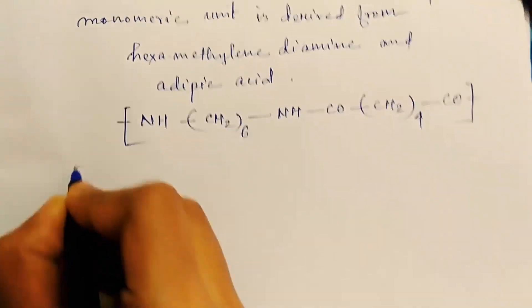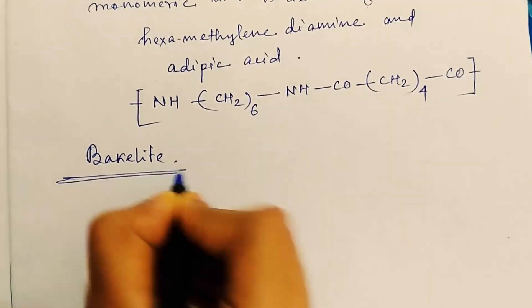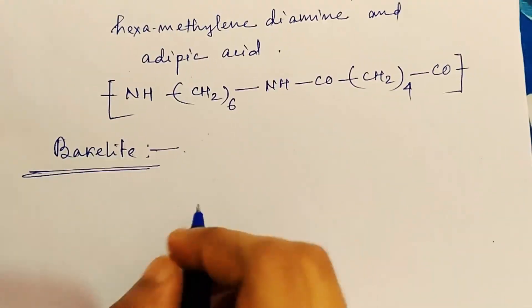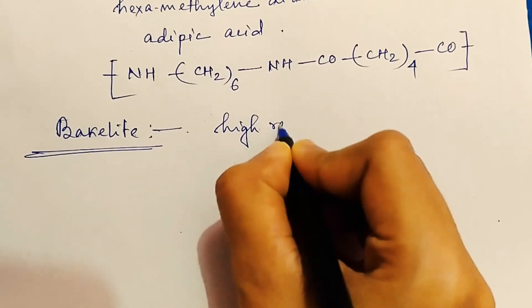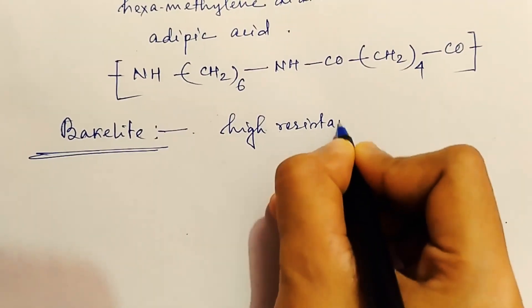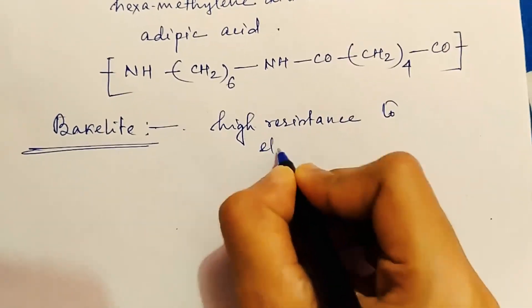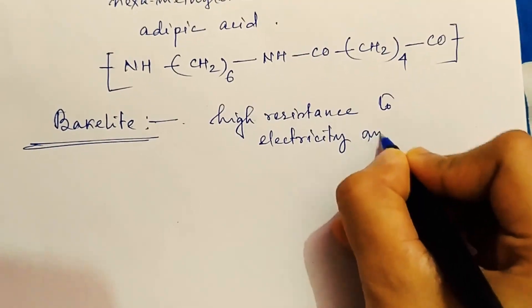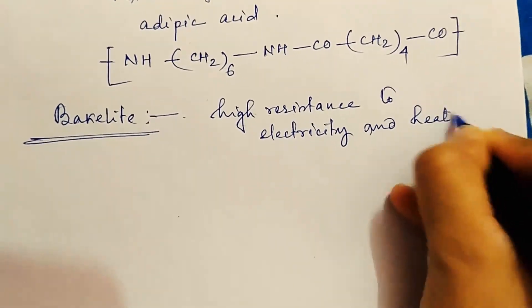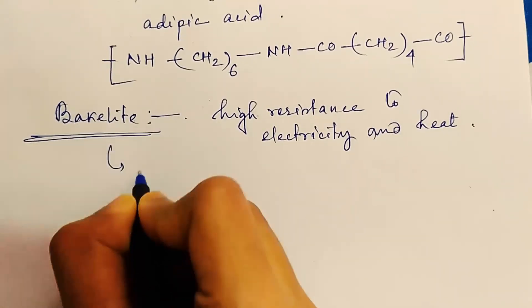Next come bakelite, another synthetic polymer. Now see, the bakelite has high resistance to electricity and heat. So because of this property, the bakelite is used in preparing or in making the switches, electric switches, and other electrical appliances.